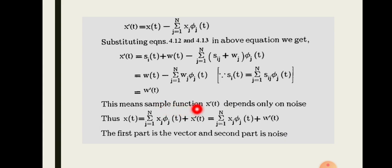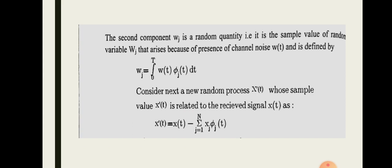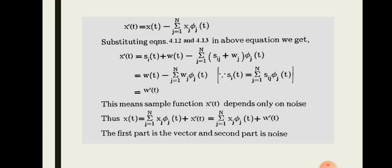This means the sample function x'(t) depends only on the noise. Thus, x(t) = Σ(j=1 to N) xj · φj(t) + x'(t), and since x'(t) = w'(t), we can substitute w'(t). The first part is the vector representation and the second part is the noise residual in the AWGN channel.